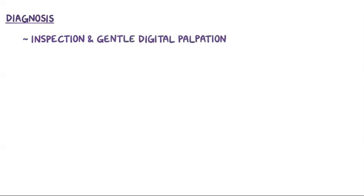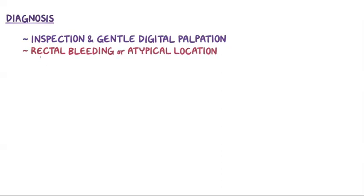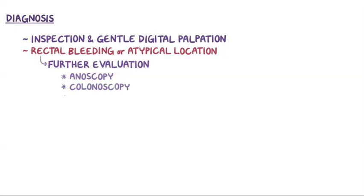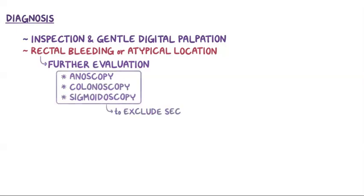The diagnosis of an anal fissure is confirmed with inspection and gentle digital palpation of the anal verge causing anal pain. Individuals with rectal bleeding or an atypical location of the fissure should get further evaluation, including anoscopy, colonoscopy, or sigmoidoscopy, to exclude secondary causes of an anal fissure or an alternative diagnosis like hemorrhoids.